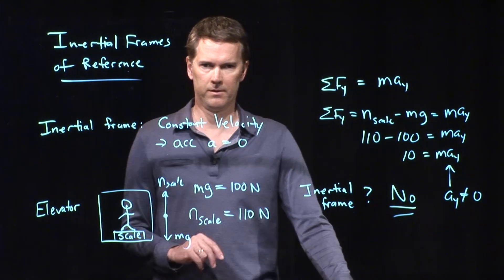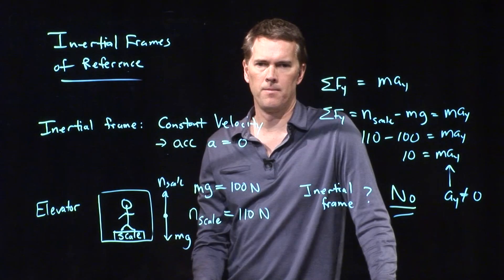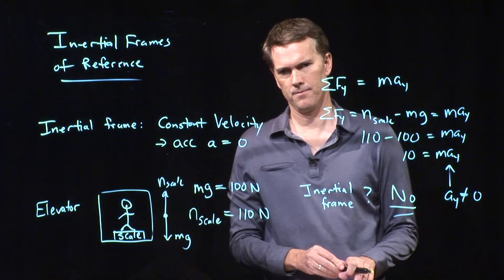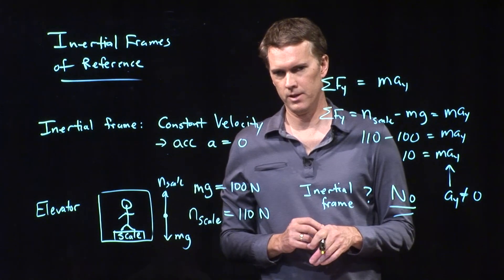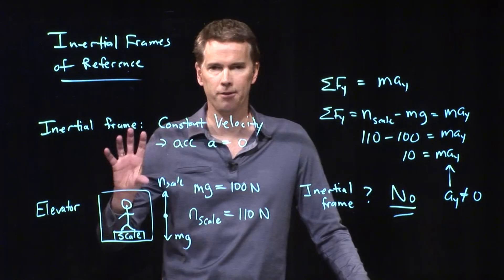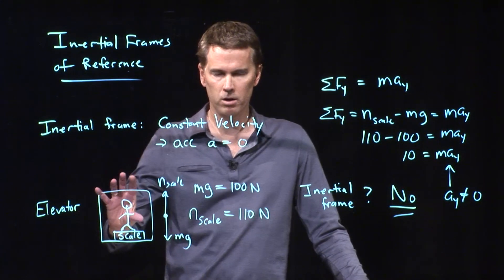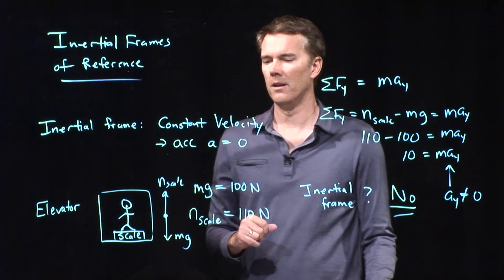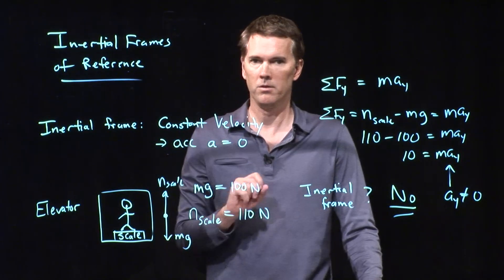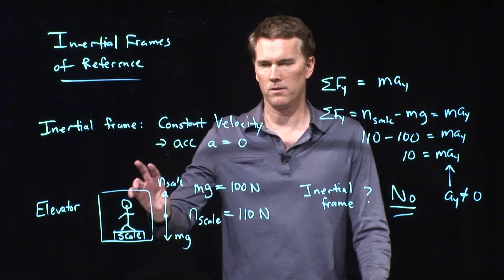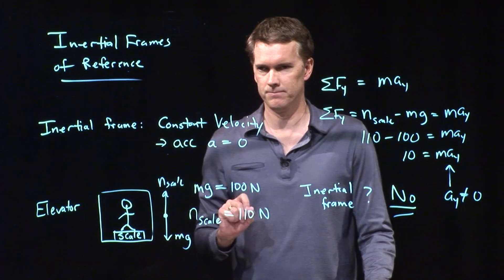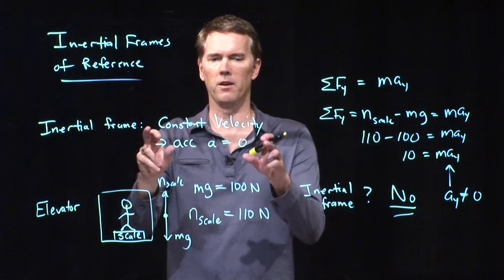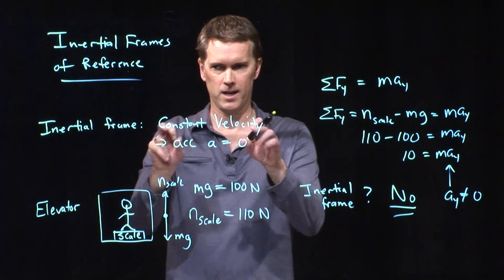If this was an inertial frame, Mai, what would the scale reading have to be? It would have to read 100 newtons. Absolutely right. And that can happen when the elevator is at rest or when the elevator is moving with constant velocity. If it's moving up with constant velocity, then your scale reading is exactly the same as your mg, and the acceleration of the elevator is zero. So when you think about inertial frames, just think: is that frame moving at constant velocity?